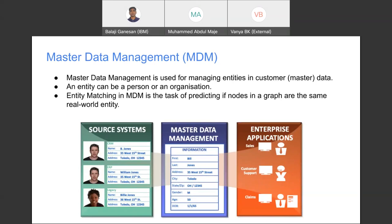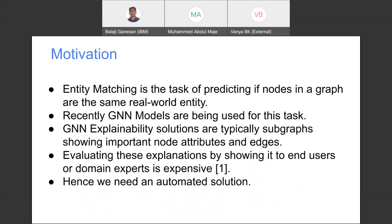So for this, GNN models are being used and there are GNN explainers, which output a subgraph explaining these neural model predictions by showing the important nodes, attributes, and the edges. So evaluating these explanations by showing it to a human evaluator or domain expert is expensive. So we need an automated solution.